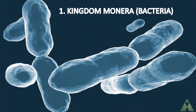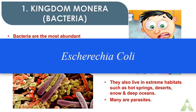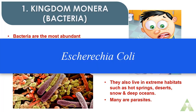Kingdom Monera consists basically of bacteria. Bacteria are the most abundant microorganisms — hundreds are present in just a handful of soil. They can survive in extreme habitats such as hot springs, deserts, snow, and deep oceans. They are also parasitic in nature. A friendly bacterium is Escherichia coli, which resides in our intestine or gut lining and helps us remain healthy.